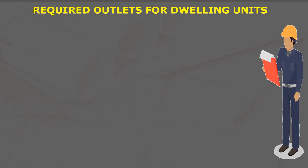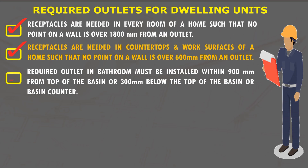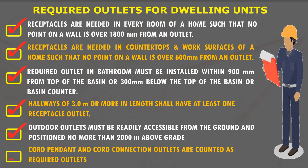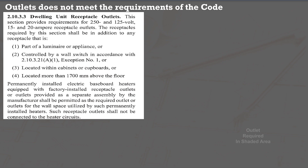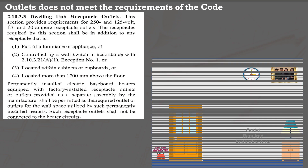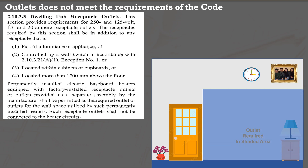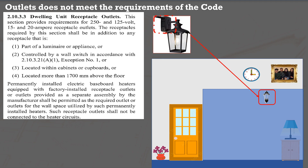We have now identified which areas of dwelling units the code requires an outlet. We also learned which type of outlet installation is considered compliant with the required outlets as specified in subsections 2.10.3.1a and b. What about an outlet installation that does not meet the receptacle outlet spacing requirement? We can find that in subsection 2.10.3.3. For example, if an outlet is required in a certain area but the installed outlet is part of a luminaire or appliance, as stated in bullet number 1, this outlet does not meet the requirements and an additional outlet must be provided.